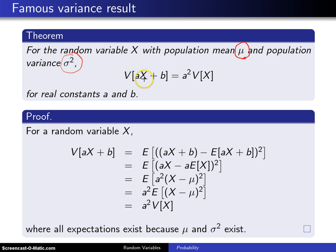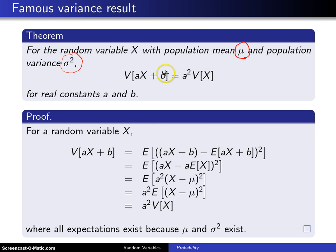The variance of ax plus b, where a and b are lowercase — they are not random variables, they are constants — the variance of ax plus b is equal to a squared times the variance of x. Interestingly, on the right-hand side, b completely drops out, and you'll see why in the proof here.